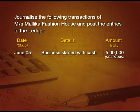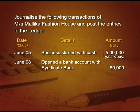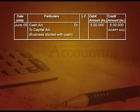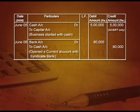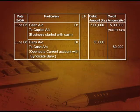Next entry: open a bank account with Syndicate Bank for 80,000. I am depositing cash into Syndicate Bank, so bank account debit and cash account credit. The journal entry is bank account debit to cash account — 80,000. In bank account on the debit side I will write 'To Cash', and in cash account on the credit side I will write 'By Bank' 80,000.